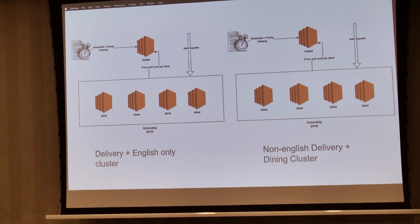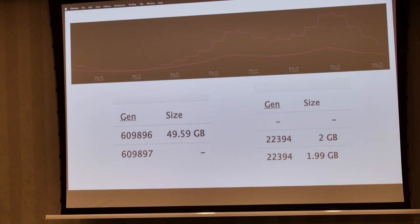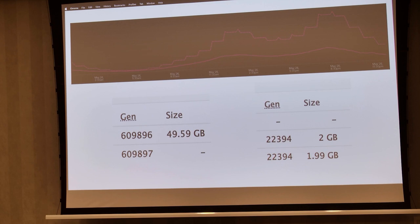We identified that even though we support 13 languages, 85% of our users search in English, then Hindi, then others. So we decided to split into two Solr clusters: one for delivery English-only queries, and one for dining plus other languages, since dining queries were far fewer than delivery queries. This drastically reduced the index size. The new English-only delivery cluster handles most queries with a smaller index size, which solved our scalability concern.